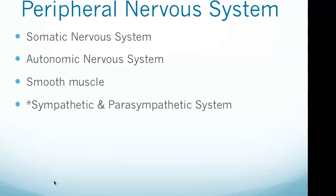Smooth muscle is responsible for involuntary muscular contractions and is found in the walls of visceral organs such as the gastrointestinal tract and also in blood vessels. Cardiac muscle is also involuntary but occurs only in the heart.